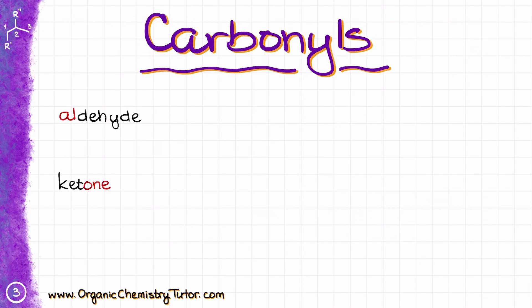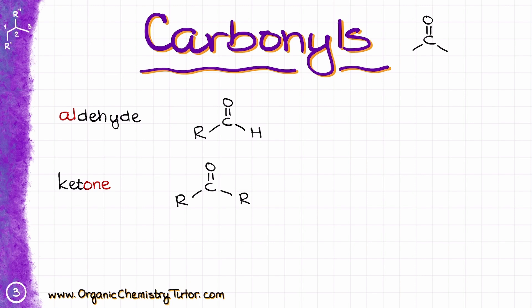Moving on, we have carbonyls. Carbonyls are also oxygen-containing groups and are a huge family of functional groups. All carbonyls are going to have a C=O double bond. The first two are aldehyde and ketone — very similarly looking functional groups, but with one huge difference. The aldehyde functional group will have a C=O double bond connected to a hydrogen on one end, while a ketone has a carbonyl connected to two carbon-containing groups and does not have a hydrogen. A simple mnemonic: an aldehyde has a hydrogen.